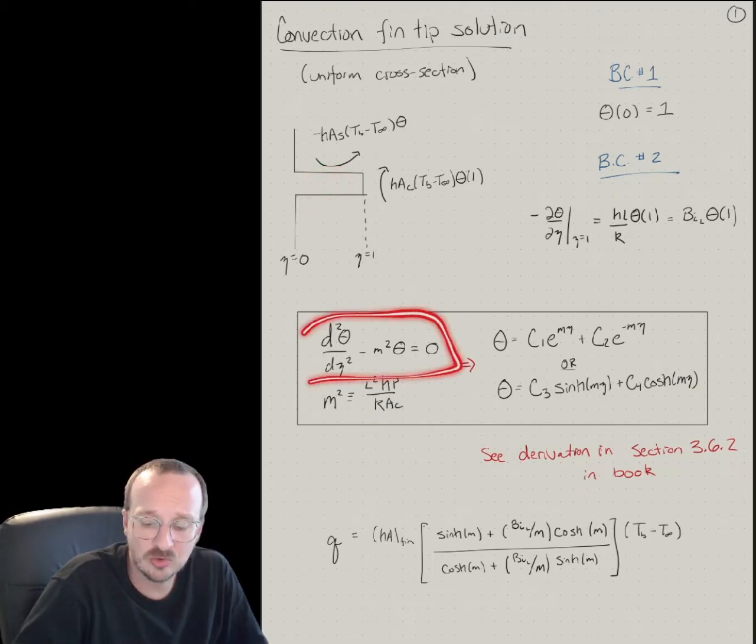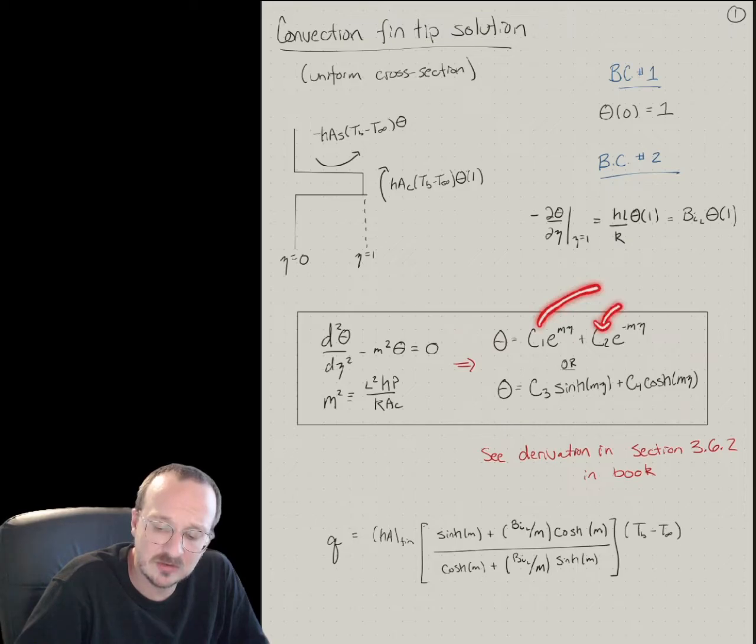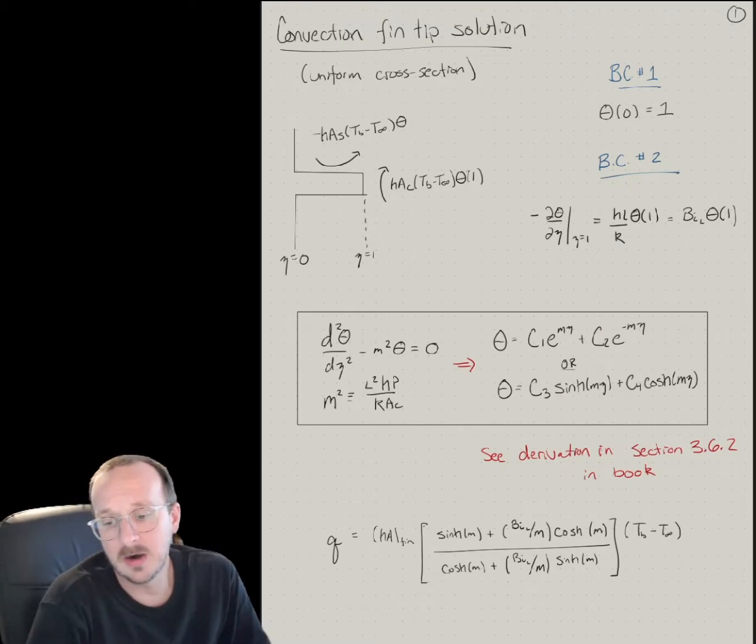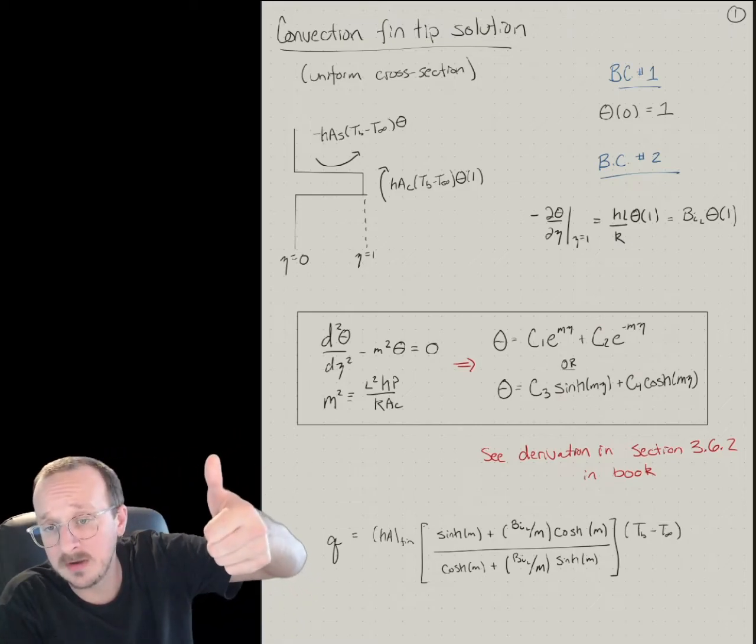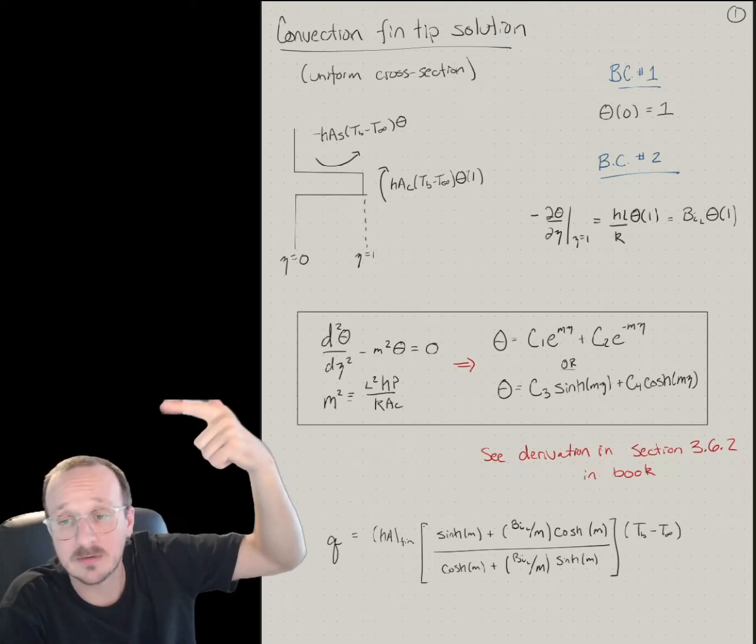We derived a differential equation from an energy balance, solved this differential equation, and now we're trying to plug in various boundary conditions to solve for what these constants are and understand the temperature profile, heat transfer rate, and a fin. We talked about an infinite fin, an adiabatic fin, and when an adiabatic fin can be assumed infinite.